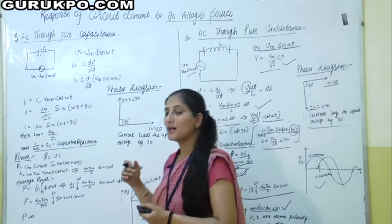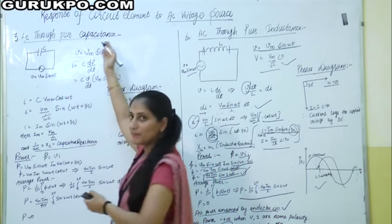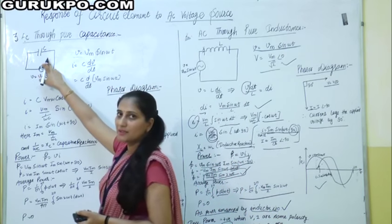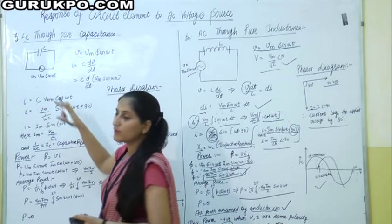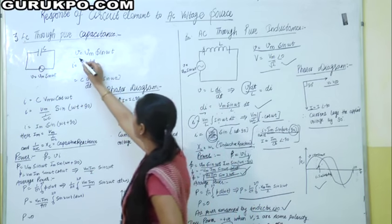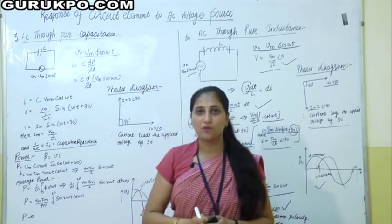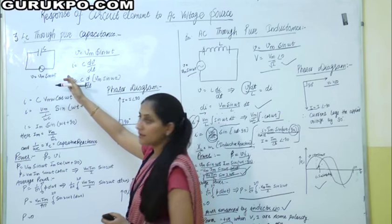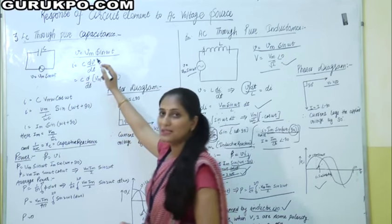Our third element is the capacitor — AC through pure capacitance. We have a capacitor C connected across a voltage source V, where V = Vm sin(ωt) is our supply voltage. When we connect a capacitor across a voltage source, there will be current flowing in the circuit. The current across the capacitor is given by I = C dV/dt.